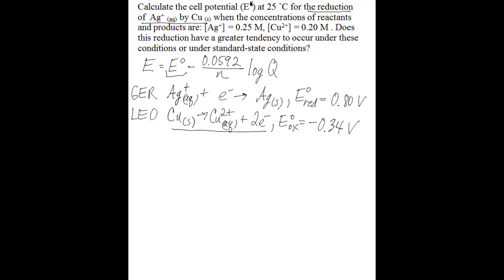To find the overall balanced redox equation you need to cancel out the electrons on both sides of the half-reactions. But you can't do that yet because you don't have the same number of electrons on both sides. You have two electrons for the oxidation of copper but only one for the reduction of silver. So you need to multiply the silver reduction half-reaction by two, giving two electrons and requiring two silver cations to produce two solid silvers. Now you can cancel out the electrons on either side.